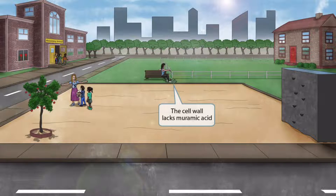A girl on a bench was looking at her hair with a mirror when she accidentally dropped it and it shattered into pieces. Mirror sounds like muramic acid, a normal component of peptidoglycan within the bacterial cell wall. The breaking mirror helps you remember that the cell wall of chlamydia lacks muramic acid. This is one reason why chlamydia doesn't Gram stain well, and also why it's resistant to beta-lactam antibiotics, which normally target the cell wall.